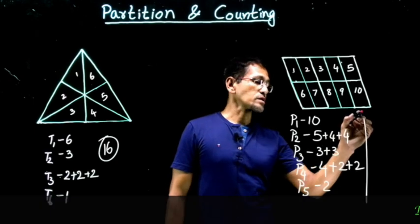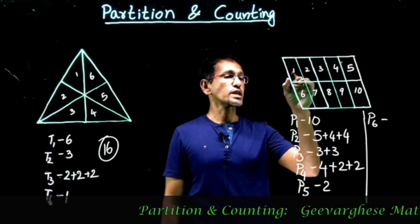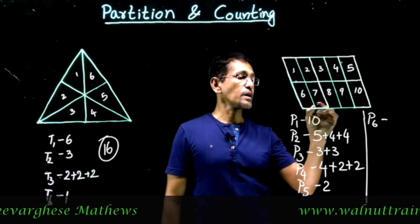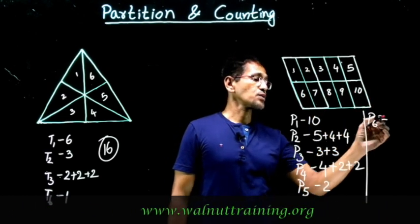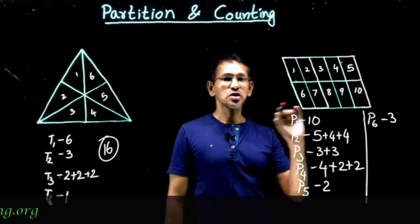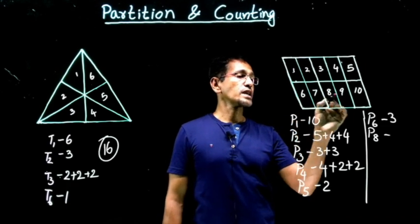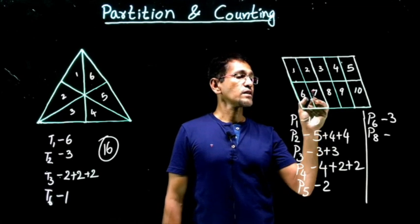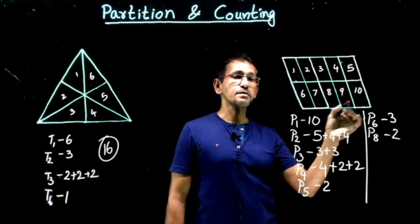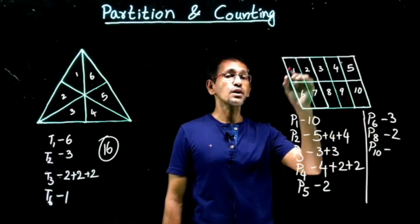P6 — six pieces together: one, two, three, six, seven, eight is a parallelogram; two, three, four, seven, eight, nine is another; three, four, five, eight, nine, ten is another — so three parallelograms. P7 — seven pieces together — not possible at all. P8: one, two, three, four, six, seven, eight, nine is possible; two, three, four, five, seven, eight, nine, ten is another — so two parallelograms. P9 — not possible. P10 — all ten pieces together — one parallelogram.